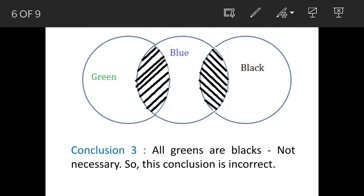Now, third conclusion is all greens are blacks. This is also not correct because some greens are blues. So, if some greens are blues then all greens cannot be black. So, hope it is clear.